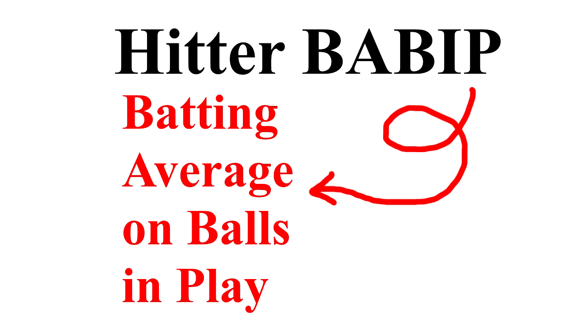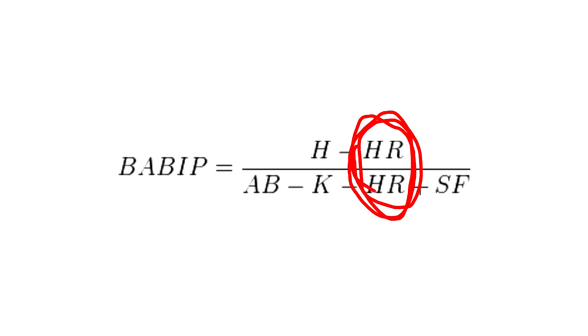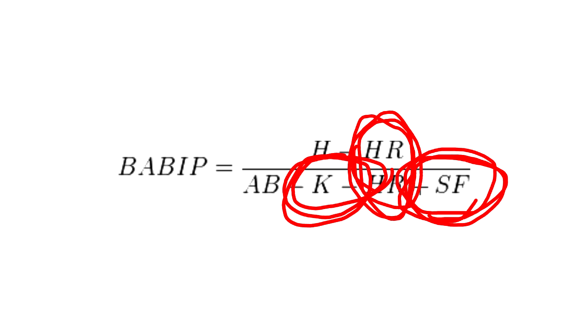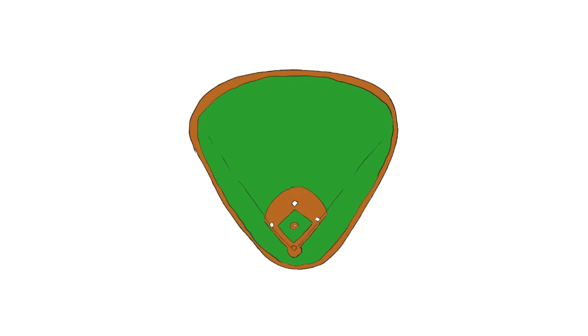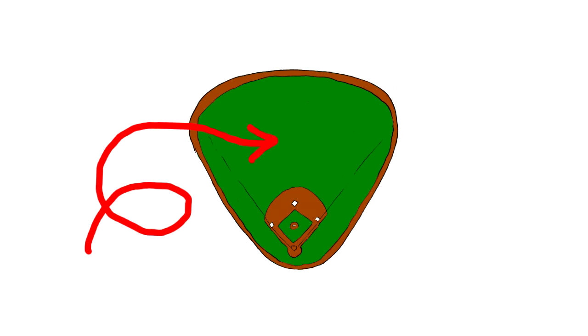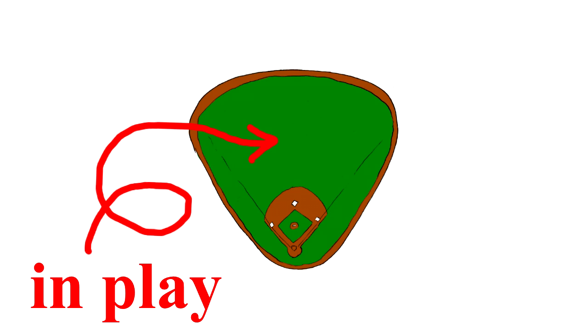BABIP, or Batting Average on Balls in Play, is a player's batting average excluding home runs and strikeouts and counting sacrifice flies as outs. Basically, it is a player's batting average for when a ball is hit in the grass or clay, or in play.